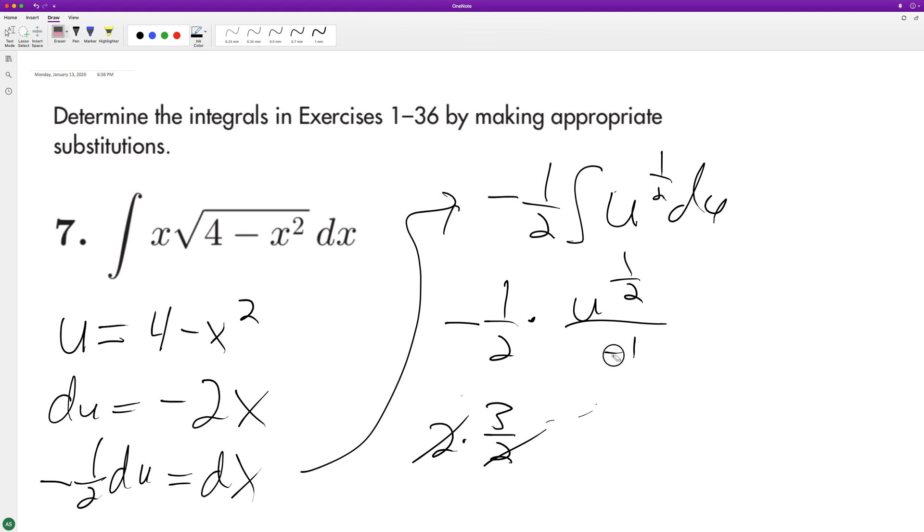It's probably a little bit confusing. Let me just do this. So we get negative 1 third, and ultimately we get negative 1 third, substitute back in, 4 minus x squared raised to the 1 half plus c.